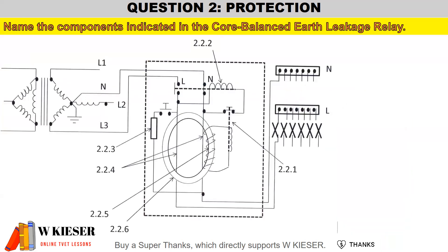In the following question, name the components indicated in the core balanced earth leakage relay. The core balanced earth leakage relay is used to detect an imbalance between the live and the neutral — in other words, a difference in the size of the current or the magnetic field on either the live or neutral phase. You only need a small current of 30 milliamps in order to trip the circuit.